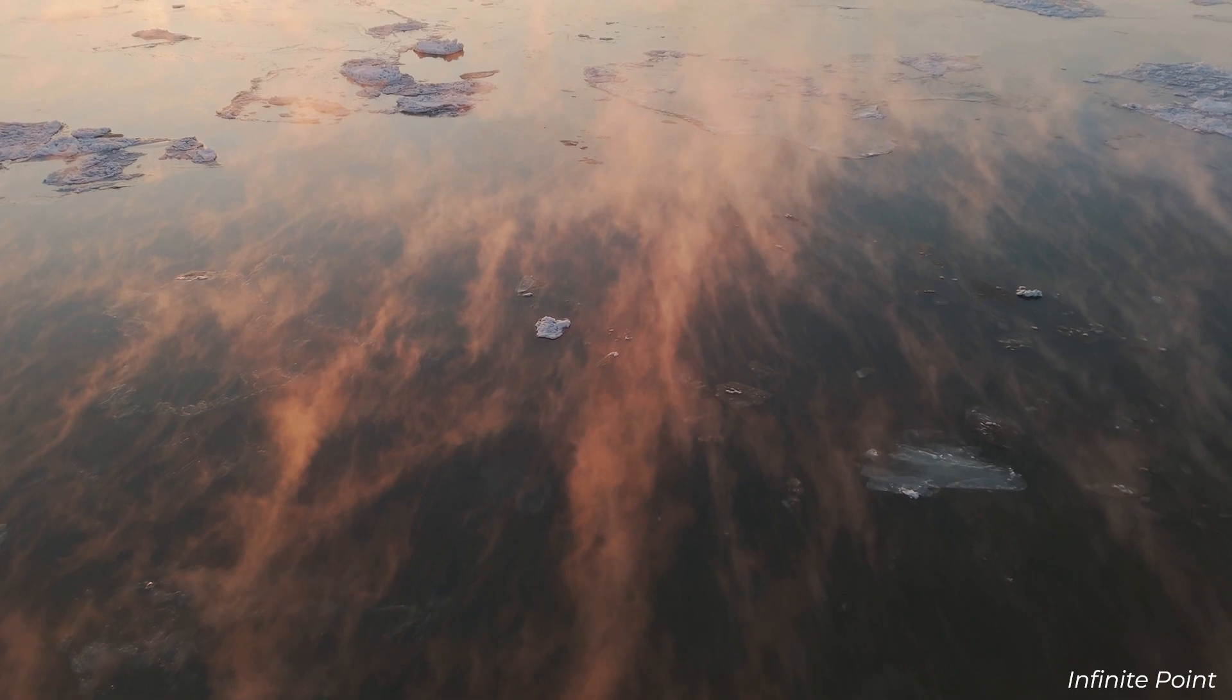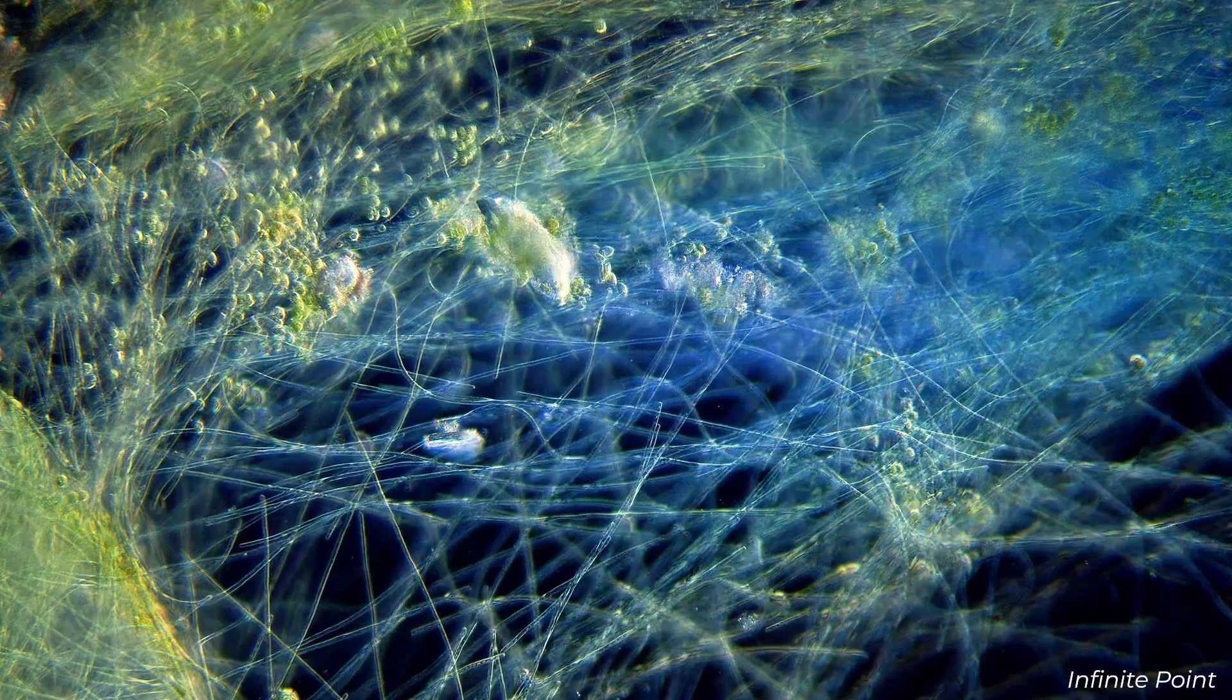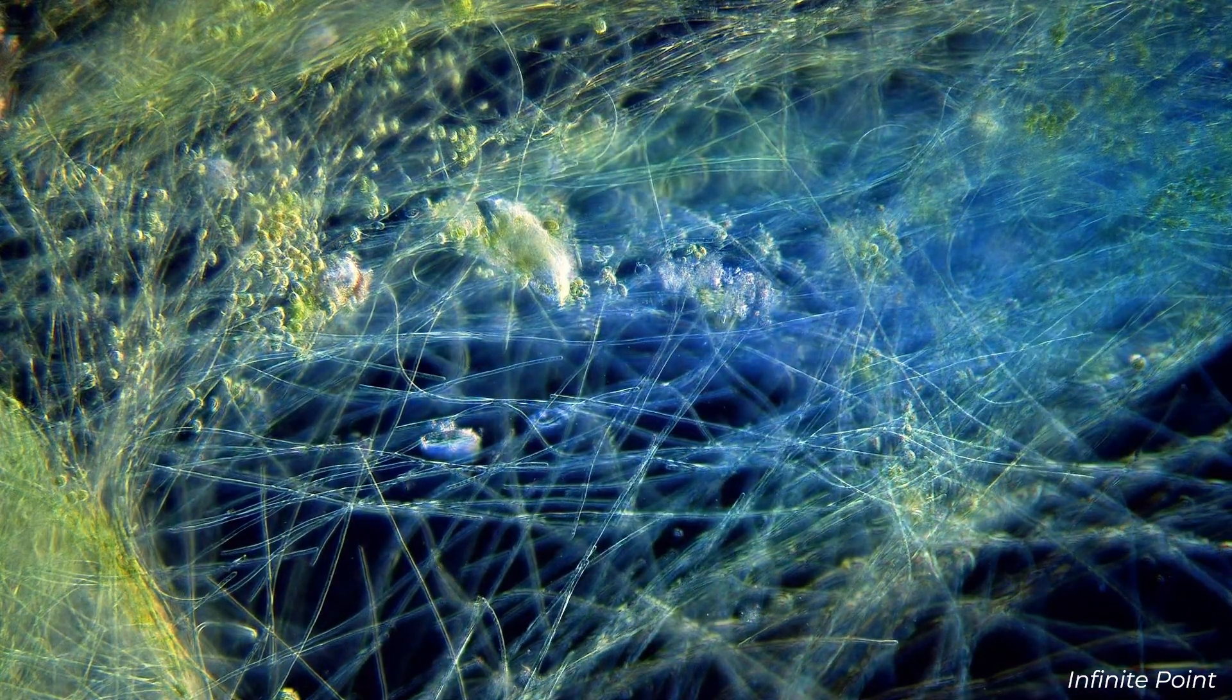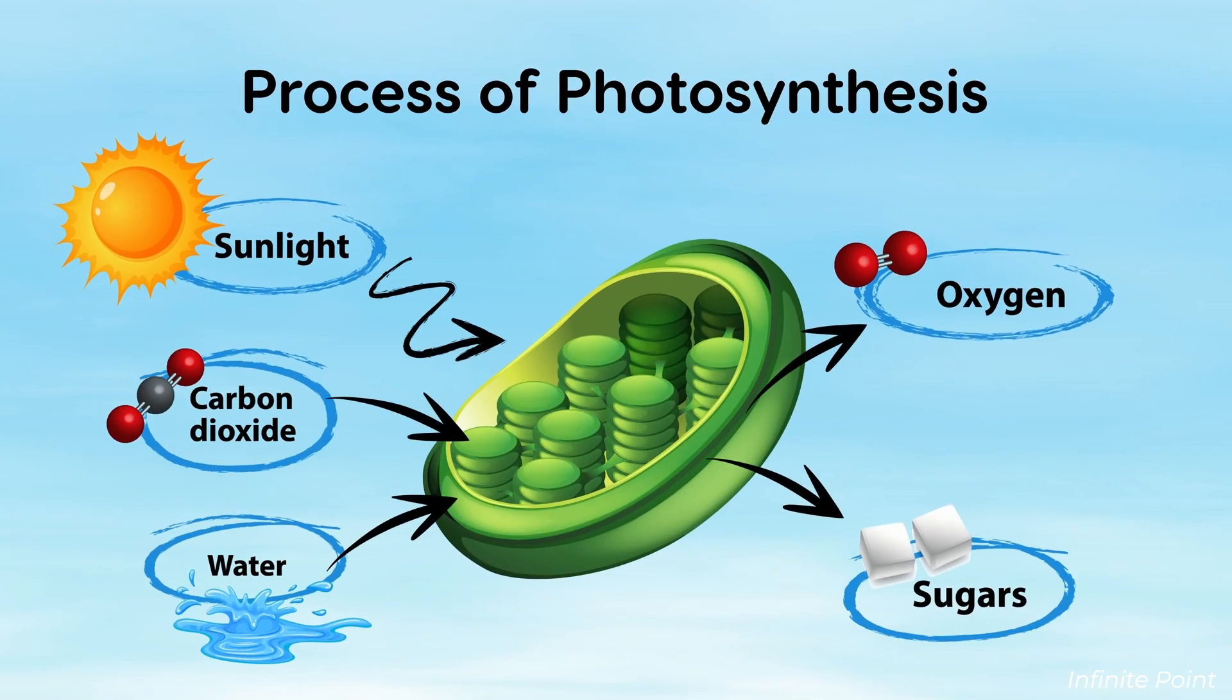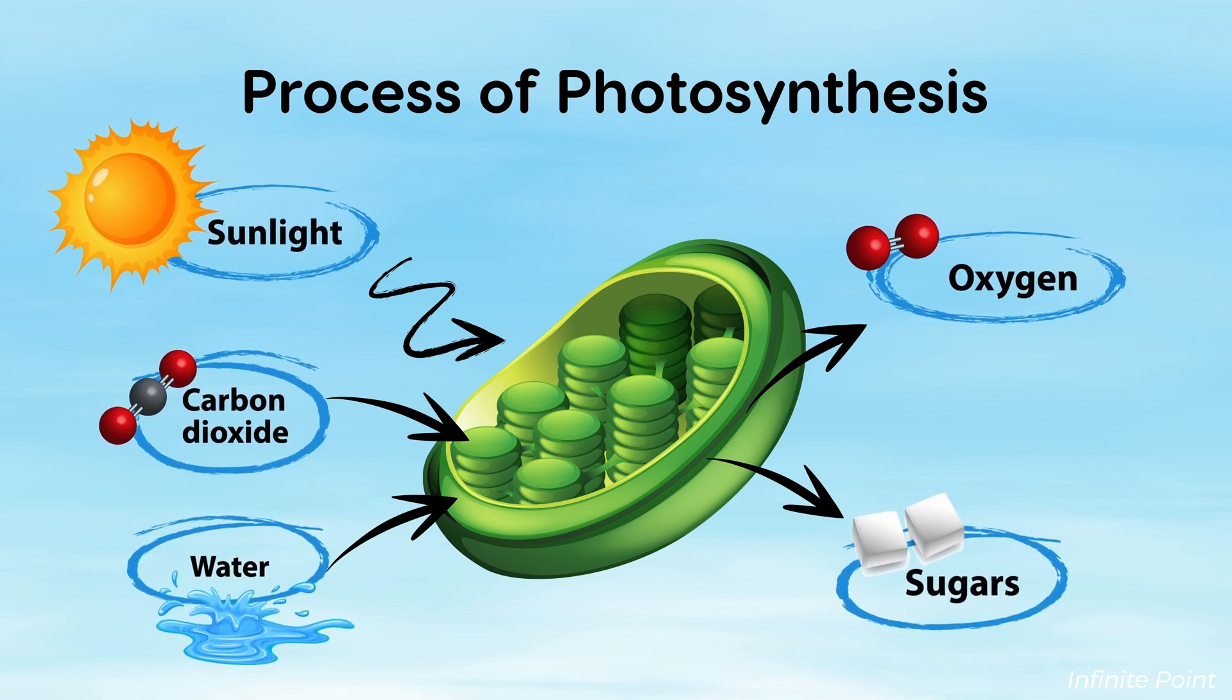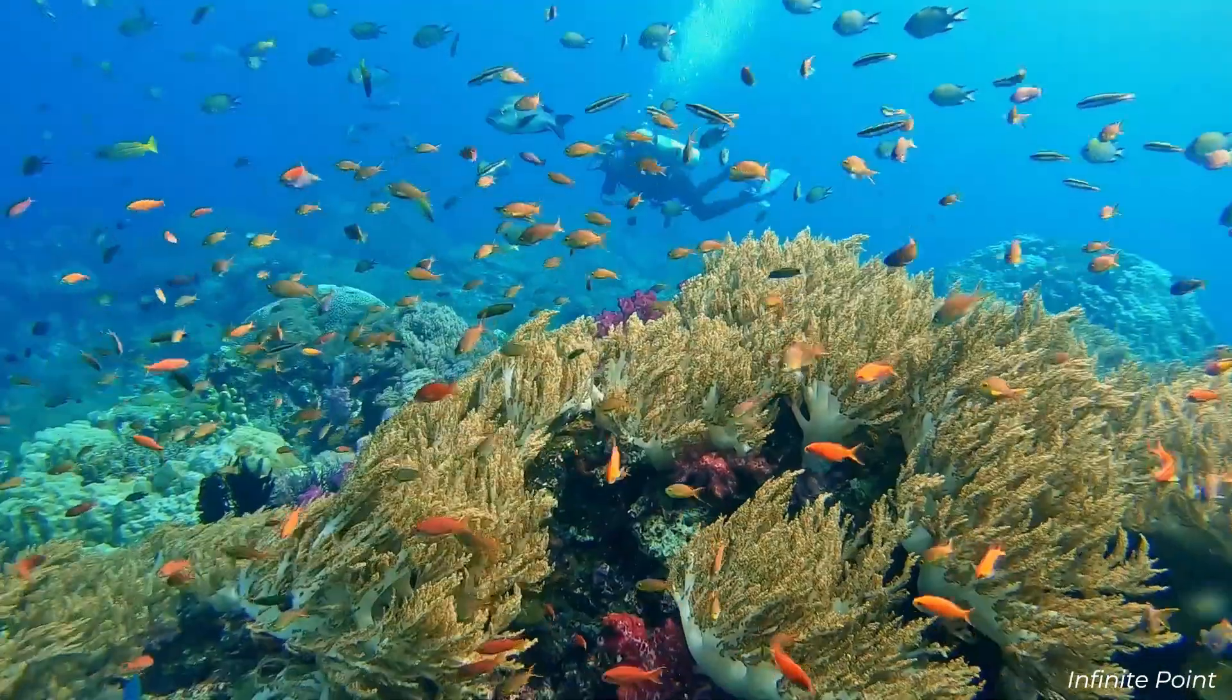Once life took hold, it began to evolve, adapting to the diverse environments of the planet. Early life forms, likely simple single-celled organisms, played a crucial role in transforming Earth's atmosphere. Through processes like photosynthesis, these organisms released oxygen, paving the way for more complex life forms. The appearance of multicellular organisms marked another leap in evolution, eventually leading to the incredible diversity of life we see today.